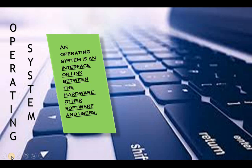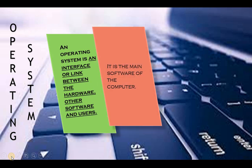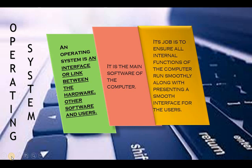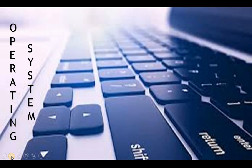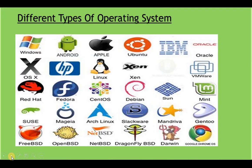Before we discuss these topics, let's revise operating systems that we studied in class 3. An operating system is an interface or link between the hardware, other software, and users. It is the main software of the computer. Its job is to ensure all the internal functions of the computer run smoothly, along with presenting a smooth interface for the users. At present, Windows uses a Graphical User Interface, GUI. We have different types of operating systems — Windows, Android, Apple, Ubuntu, and so on.